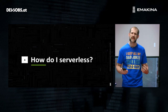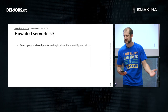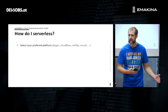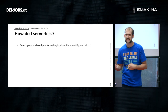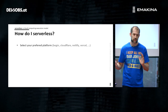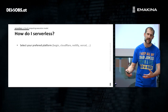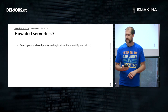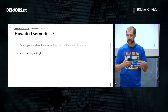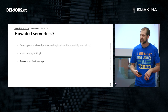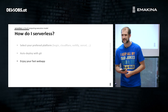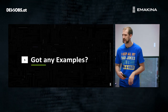So how do you go serverless with SvelteKit? It's pretty easy. You just select your preferred platform — you can use Begin, Cloudflare, Netlify, Vercel, or any of the other adapters. Those four are supported by the platform itself. You auto-deploy with Git as soon as you set up the configuration. Then you enjoy your fast web app and let your client be wowed by how fast it gets.